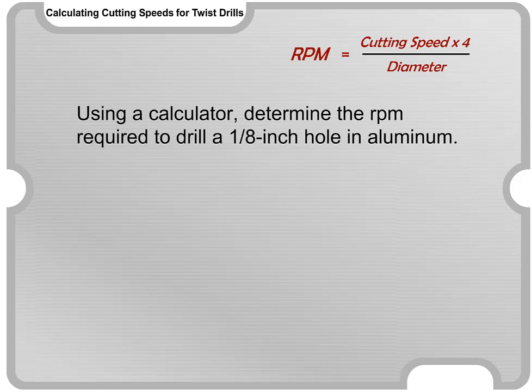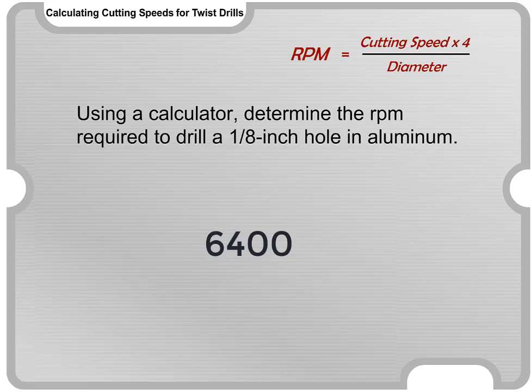Using a calculator, determine the RPM required to drill a one-eighth inch hole in aluminum. The final answer is 6400.